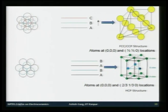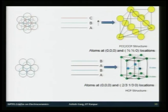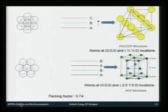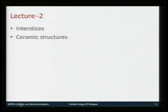None of these structures — HCP, FCC, BCC, or simple cubic — are fully dense; all have empty spaces between atoms called voids or interstices. These are very important because smaller atoms can occupy these spaces and are quite instrumental in determining material properties. For instance, in steel (an iron-carbon alloy), carbon increases strength by occupying the smaller interstices in the BCC structure of iron. In this lecture we will start with interstices and structures of ceramic compounds.